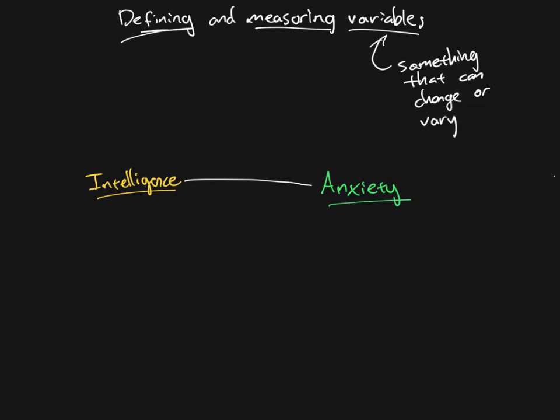So for example, with intelligence, are we talking about someone's ability to reason through a problem? That might be one way of defining intelligence. We give them some kind of problem and we see if they're able to solve it. But even that can go in different directions.